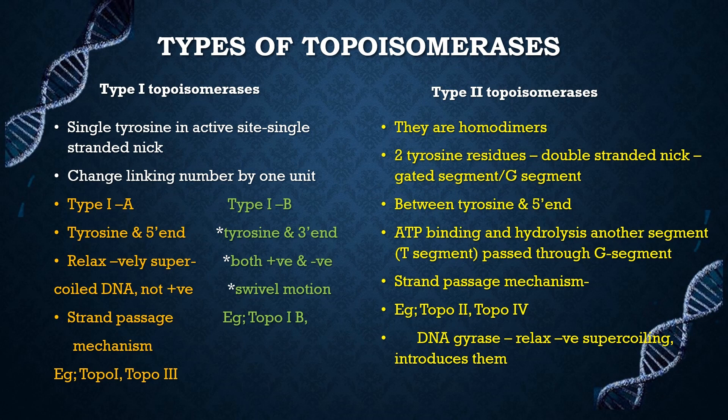In subtype Type 1b, the covalent intermediate is formed between tyrosine and the 3' end of the nicked strand. They relax supercoiling by a swivel motion around the nick and can relax both positive and negative supercoiling. Examples include topoisomerase 1b.